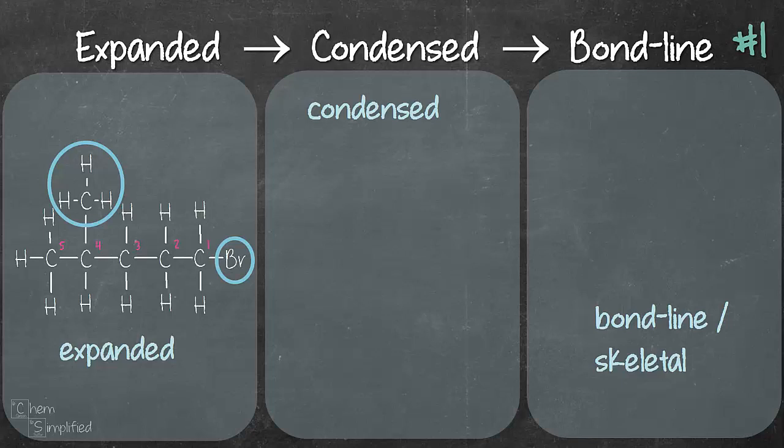Don't worry about it too much in terms of numbering unless you need to know how to name the nomenclature and in that case I will post related videos in the description box below. So based on our expanded structure we have 5 carbons and bromine on carbon 1 and CH3 group on carbon 4.